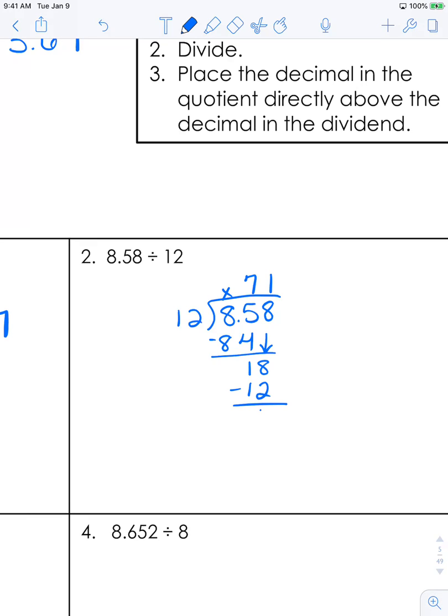Now, we're not going to have remainders here, so we're going to continue dividing. In order to continue dividing, you need to extend the number inside. Add a zero to the back of it. With a decimal, you can add as many zeros as possible and it will still be the same number. We'll drop down the zero, and then we have 60. 12 goes into 60 five times. Our answer is zero at the bottom, so we'll pull this decimal up. Our answer is 0.715.